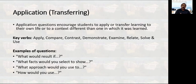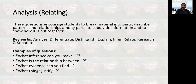The third level is Application. At this level, we test whether students are able to apply what they have understood. If you use keywords like: apply, compare, contrast, demonstrate, examine, relate, solve — these are application-level verbs. Example questions include: What would the result be? What factors would you select to show? What approach would you use? How would you use? If you use these kinds of questions, you are at level three of Bloom's taxonomy.